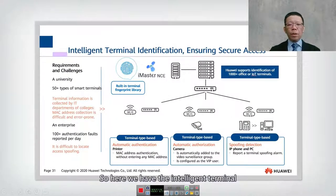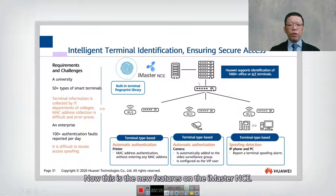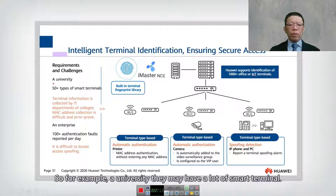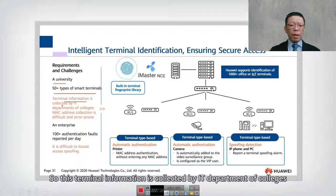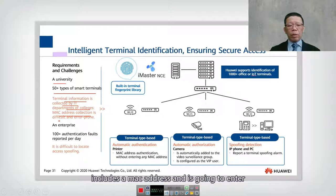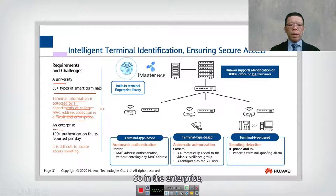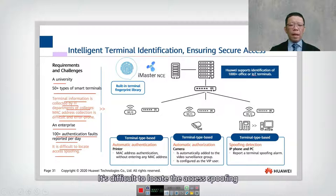iMaster NCE also features intelligent terminal identification for secure access. For example, a university may have many smart terminals, and the IT department must collect MAC addresses — a difficult and error-prone process. In an enterprise, 100-plus authentication fault reports per user make it difficult to locate access spoofing because MAC addresses can be changed.